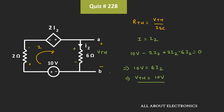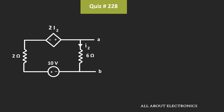That means voltage Vth is equal to 10V. So for the given circuit, the Thevenin's equivalent voltage is equal to 10V. Now let's find the short circuit current. To do that, let's short terminal A and B. When we short terminals A and B, no current will flow through the 6 ohm resistor, because the entire current will flow through the short circuit terminal. That means once we short terminal A and B, the current I2 is equal to 0.